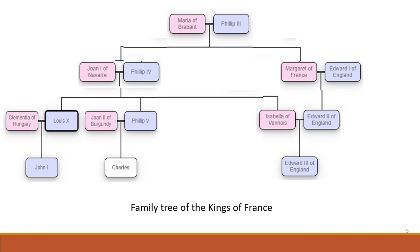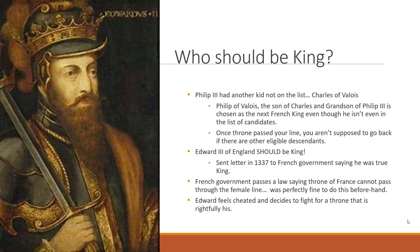Edward II had a male heir, Edward III of England, who became king in 1327 and ruled until 1377. Edward III believed he was heir to the French throne. But remember Philip IV's other brother, Charles Count of Valois—his line also claimed the French throne. So the question became: who would be the next king of France, Edward III of England or a Valois cousin?